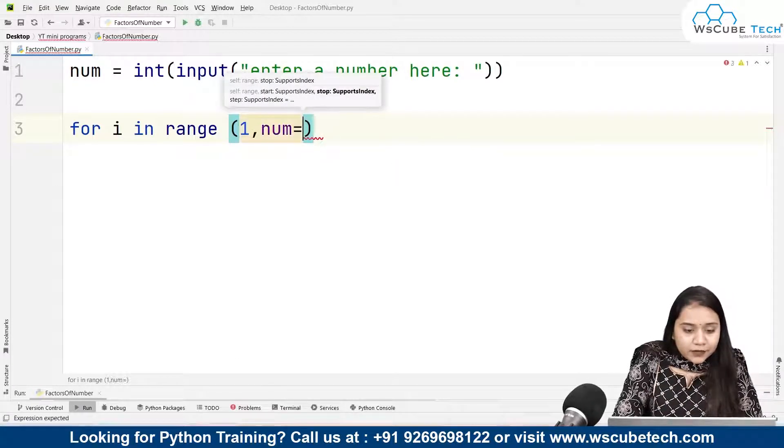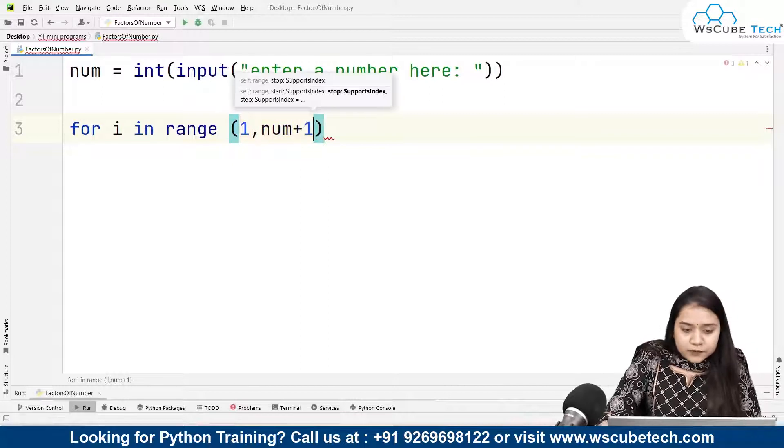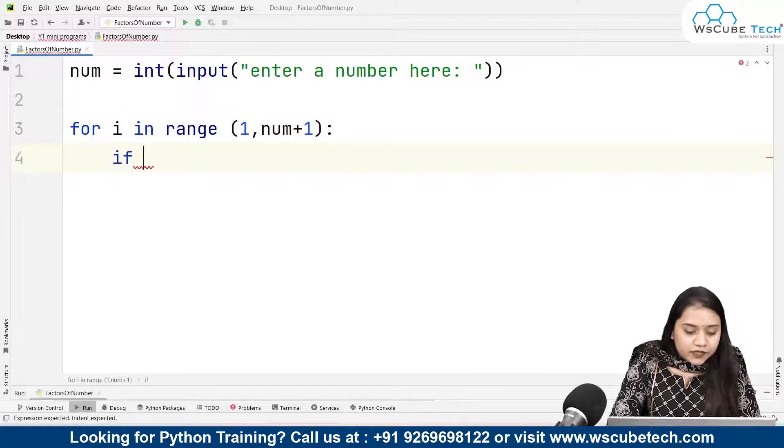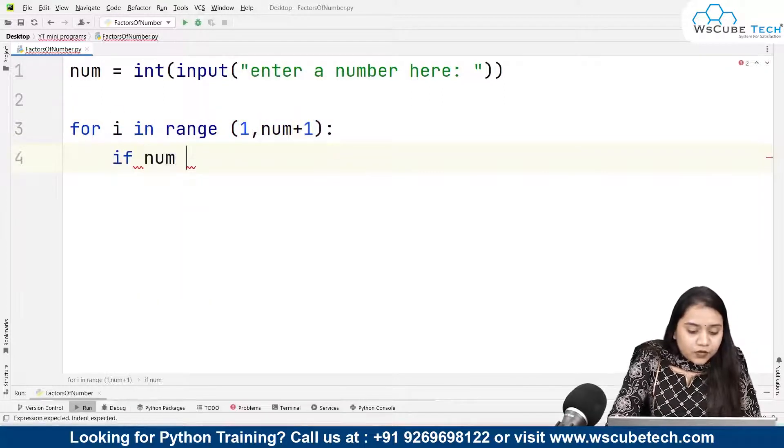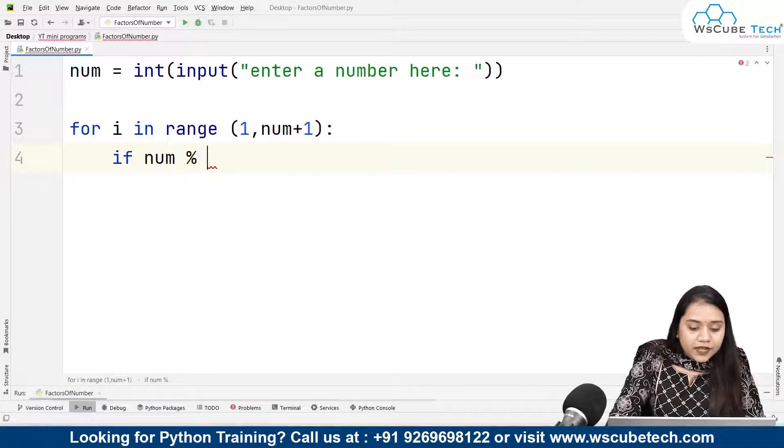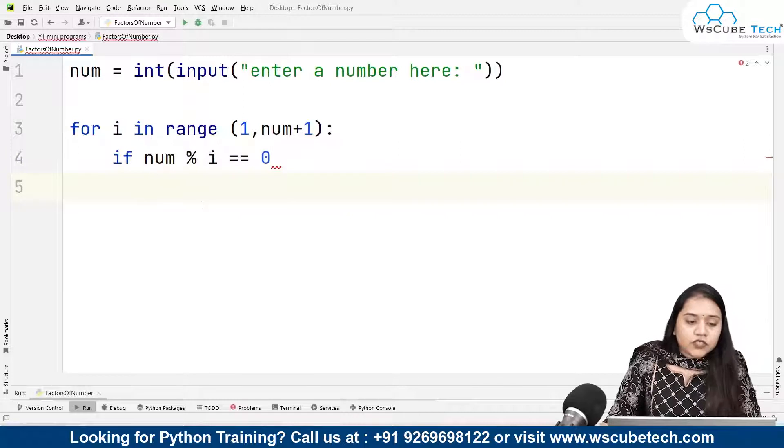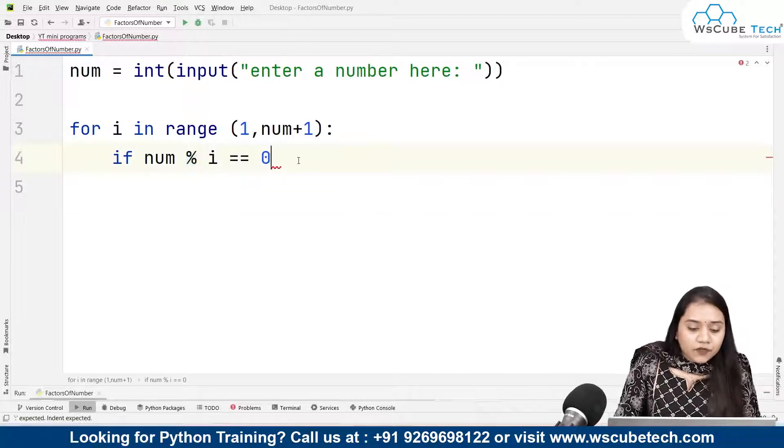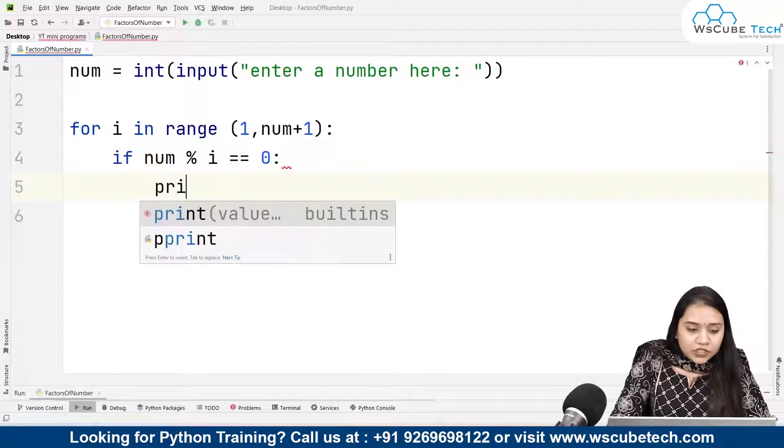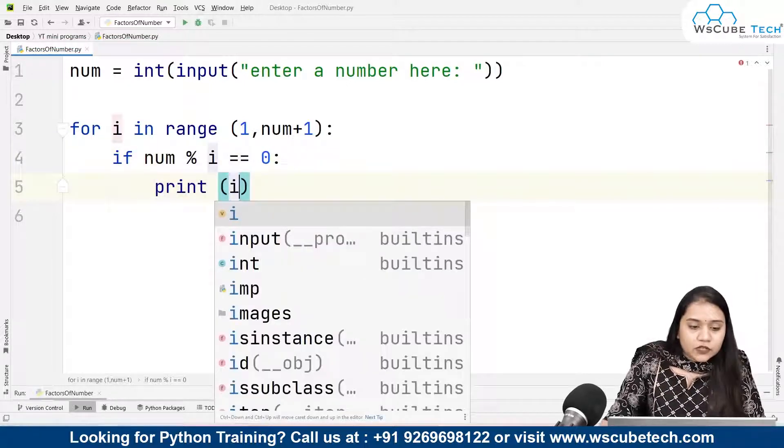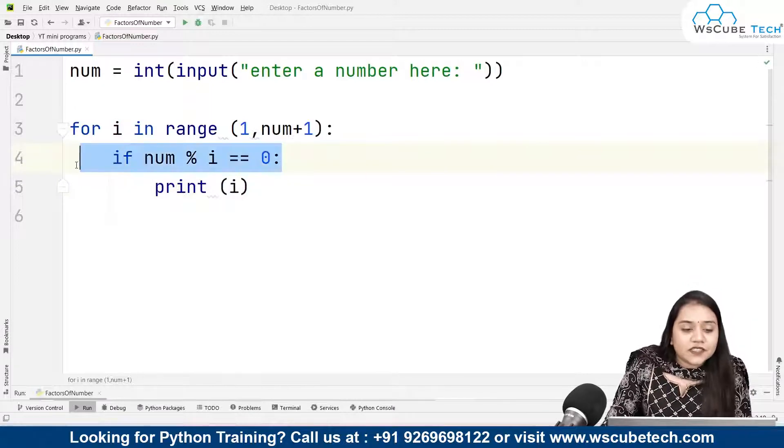And we'll be writing a condition that if number when divided by i gives the remainder 0, so here modulus function finds us a remainder. When number divided by i gives the remainder 0, in that condition we will print that number. So every time this condition is satisfied, a number will be printed.